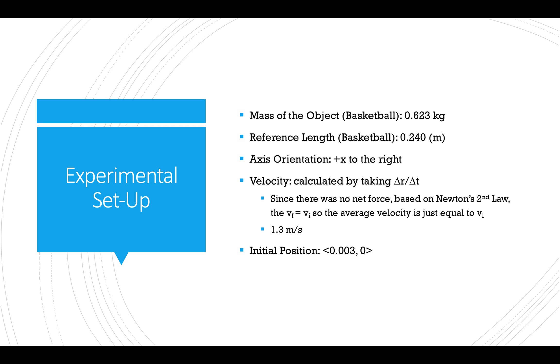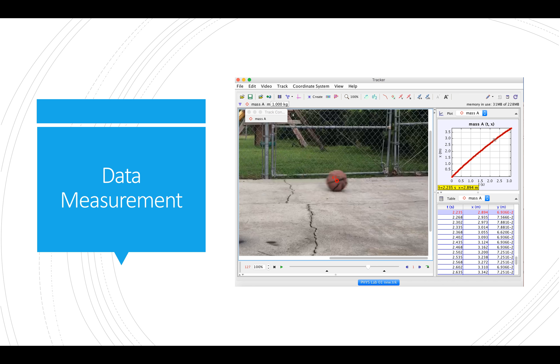This is the video of the experimental condition. The data was measured in the tracker application. A point was placed in each frame of the video for the duration of the object at a constant velocity. The position versus time graph was plotted in the top right corner and in the bottom right corner the values for each point were put into a table.